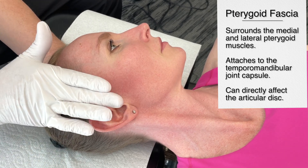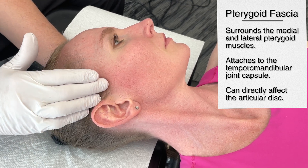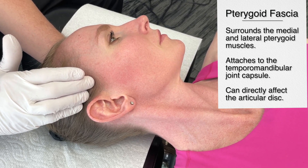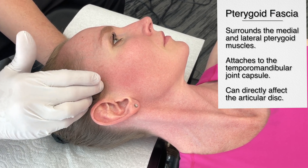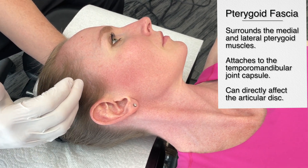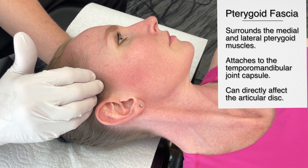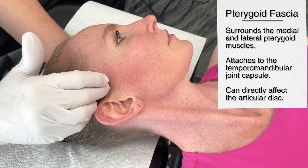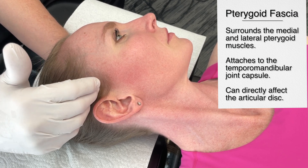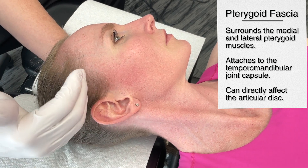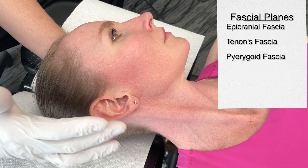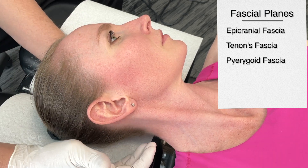Another really important area in terms of fascia is referred to as the pterygoid fascia. The pterygoid fascia encompasses the medial and lateral pterygoid muscles and attaches to the temporomandibular joint capsule — a really important structure. A section of the upper head of the lateral pterygoid muscle directly inserts into the anterior medial region of the articular disc at the temporomandibular joint. As a result, the lateral pterygoid muscle and its associated fascia can directly impact the articular disc, its position, and movement.